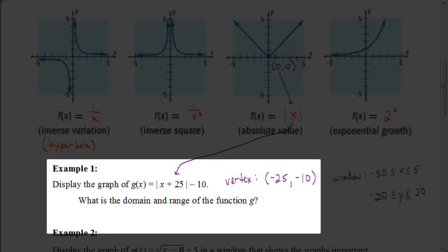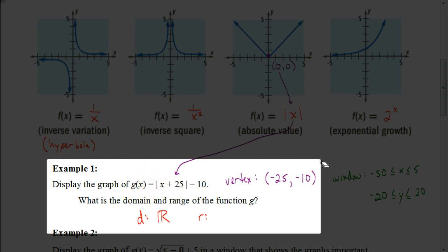Now let's find the domain and range. The domain is always going to be all real numbers unless we divide by x or take the square root of x. Here I can put any number in for x, so the domain is all real numbers. For the range, remember our vertex is at y equals negative 10, and from there the graph opens upward — just like a parabola with a positive leading coefficient. So the range is y greater than or equal to negative 10.